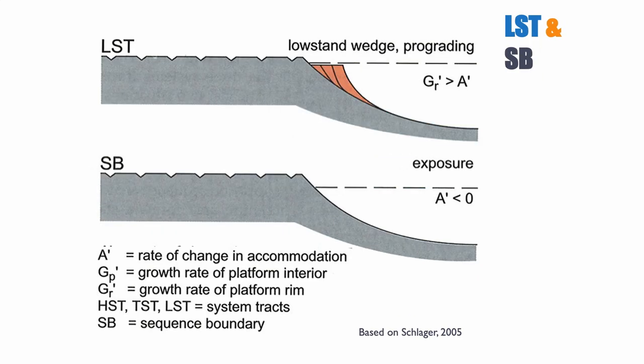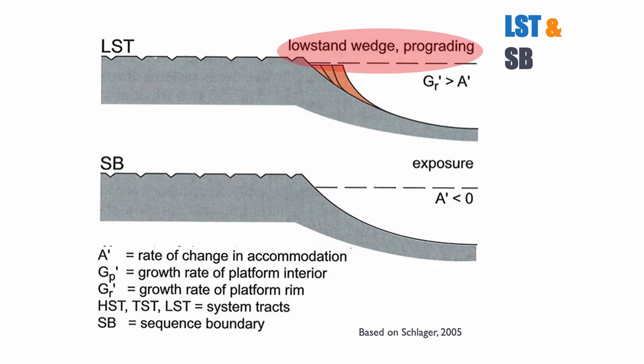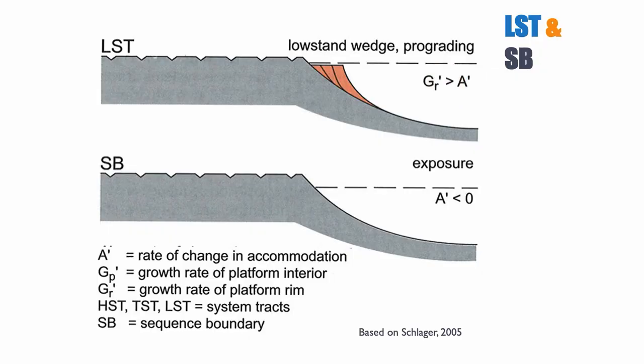During the lowstand tract, the preceding surface is exposed and could be karstified. Production on the platform is now limited to a rim, so you almost have only reef with very little of the other sediments being formed. This is a very narrow carbonate system living right on the edge of the platform. Because accommodation is low, you typically have progradation since the rate of production of the rim exceeds accommodation creation, and at the top of this you also have a sequence boundary and an exposure surface.